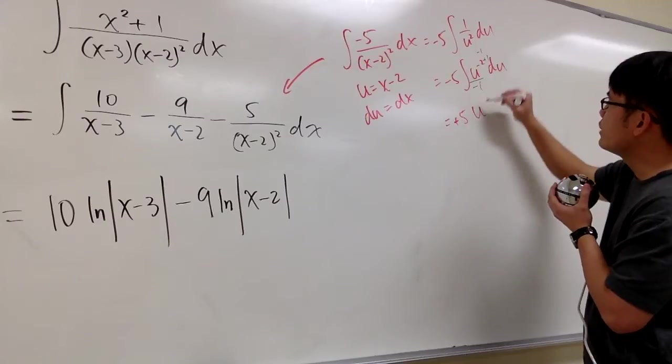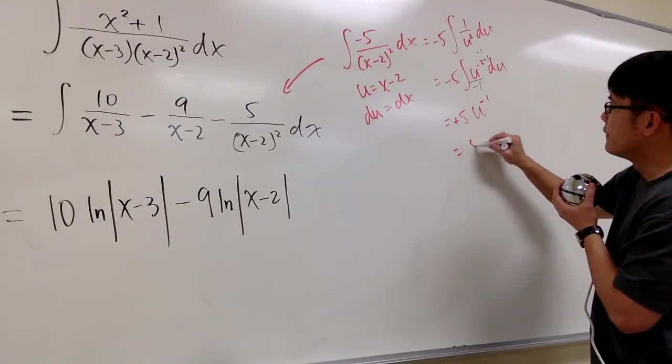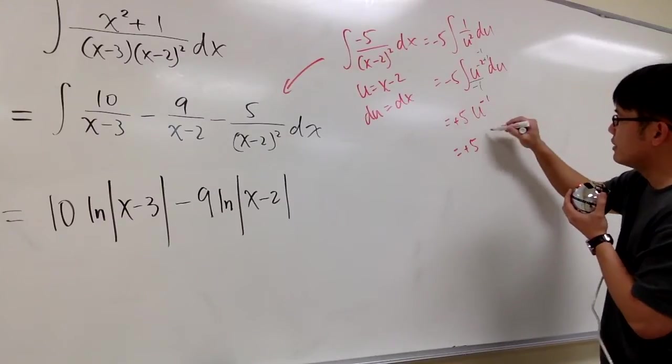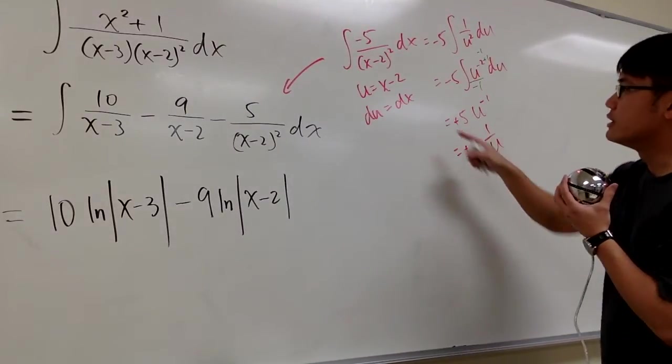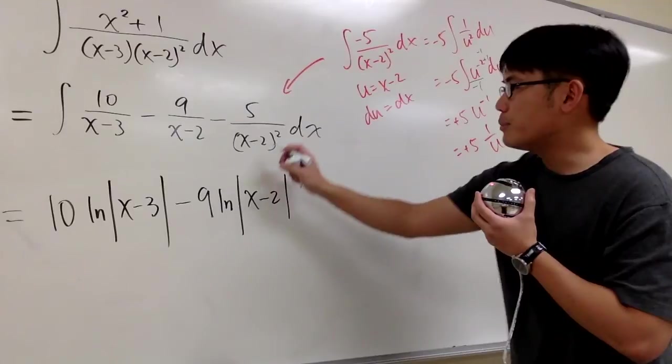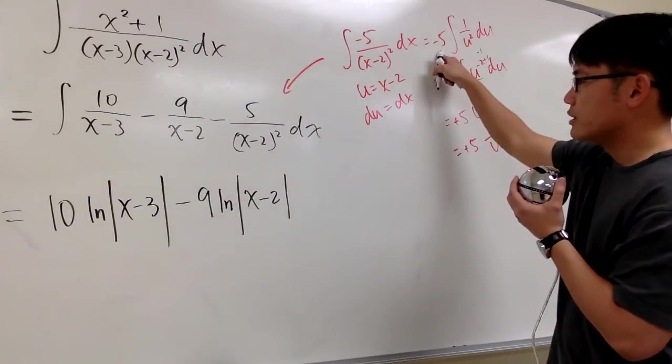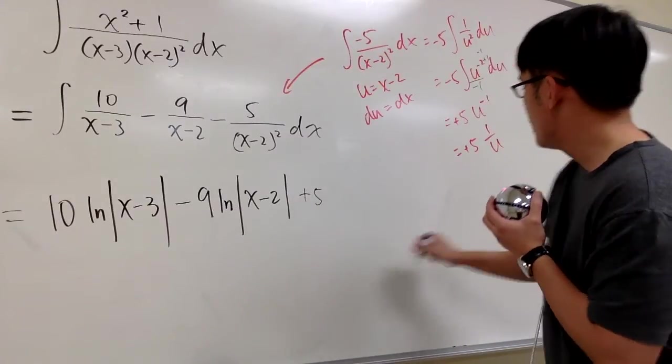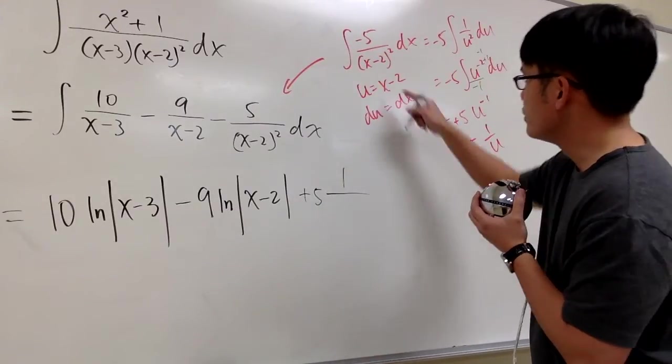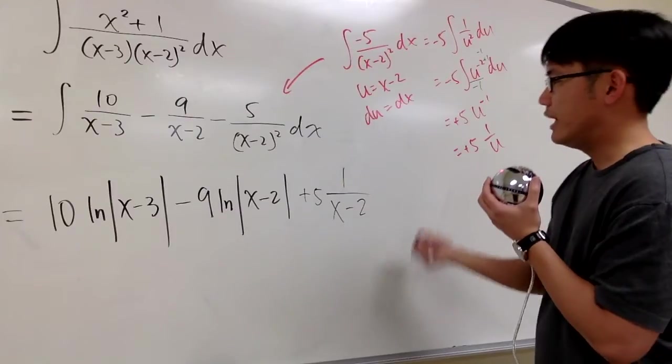So let me emphasize it's positive 5. And you have u to the negative 1 power, which is 5 over u. And u is x minus 2. So for the third part, I include the negative right here already. So we have plus 5, 1 over u, which is 1 over x minus 2. And then we are done.